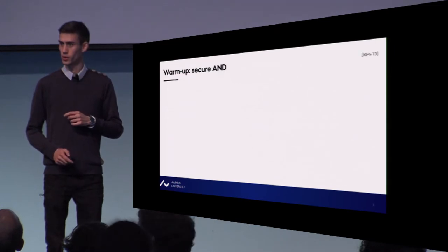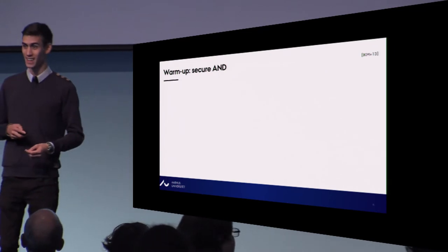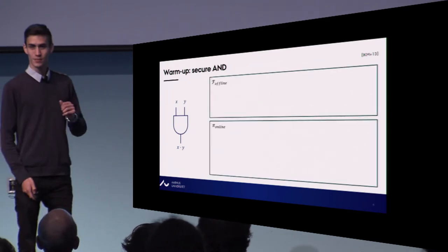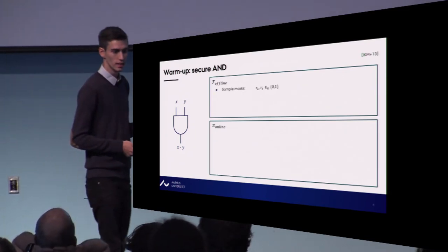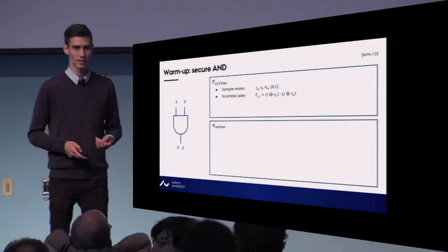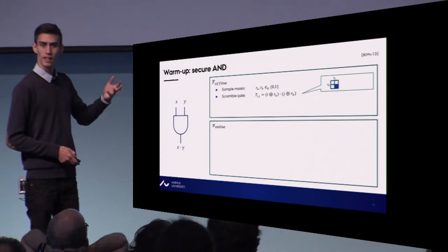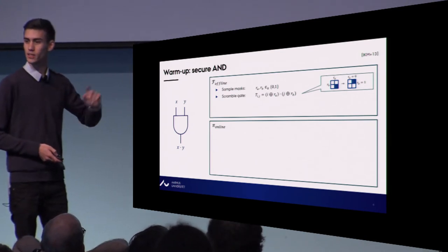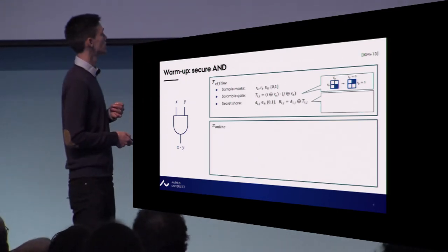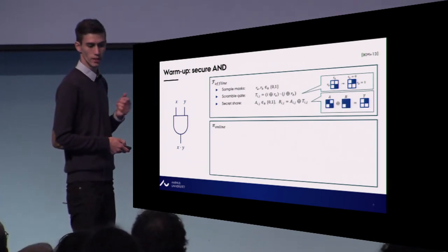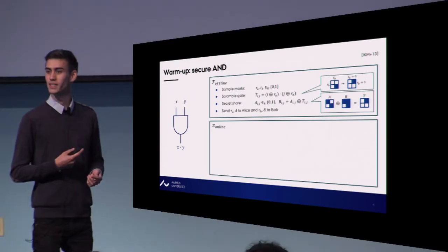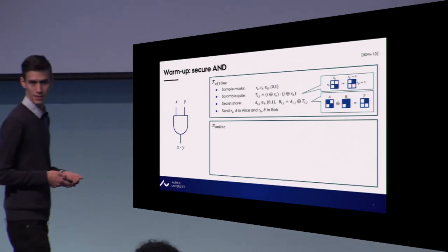To get started with the protocol, let's do a simple warm-up with computing an AND gate, which is due to Isha et al. from 2013. The preprocessing functionality samples two random bits, then scrambles an AND gate — we simply take an AND gate and, depending on the two masks, flip it horizontally or vertically. Then we secret share this table by a usual additive secret sharing scheme, choosing a random share and ensuring the invariant holds.